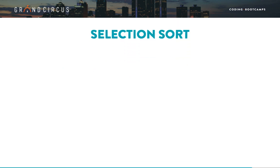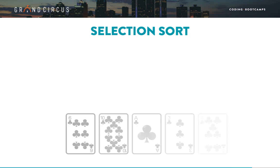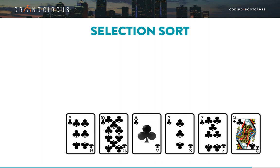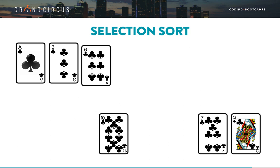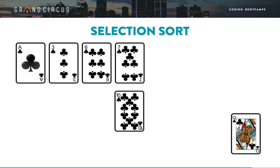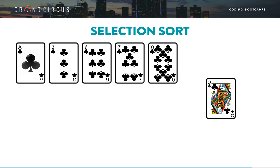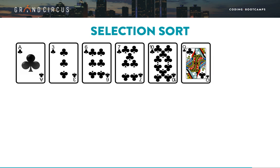Now let's compare this to a selection sort. Selection sort looks like this: lay out the unsorted cards, search for the smallest one. We have to loop through all the cards to make sure we've found the very smallest — the Ace is the smallest. Take it and add it to the sorted hand. Look through again for the next smallest. Three is the smallest. Keep repeating this search-and-place cycle until there are no more cards. You can see why this is called selection sort: because the sorting is done by selecting the value to add next.